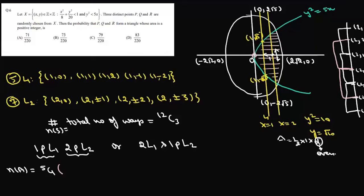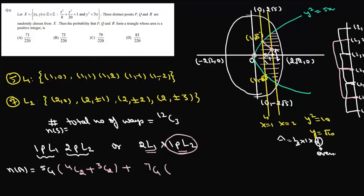So the favorable choices from L2 are 4C2 (choosing two from four odd y-values) or 3C2 (choosing two from three even y-values). For the second case — two points from L1 and one from L2 — one point from L2 can be chosen in 7C1 ways. The area is an integer if the distance between the two points on L1 is even, giving 3C2 (from the odd y-values {1, -1}) or 2C2 (from the even y-values {0, ... wait, the set with even difference on L1}).